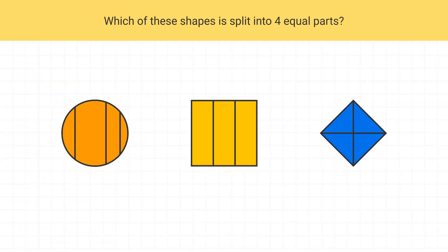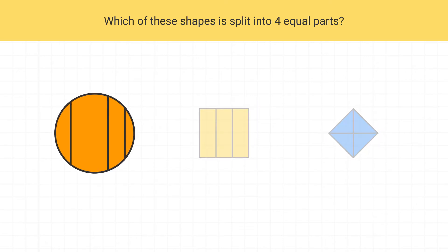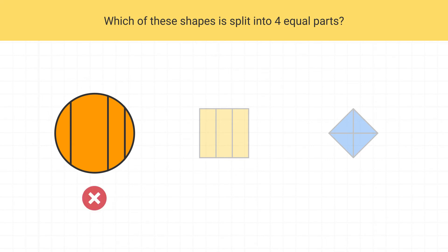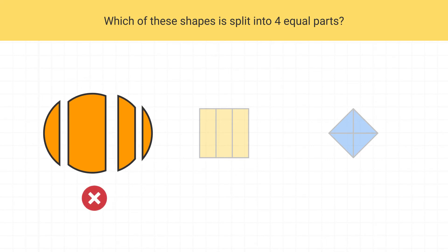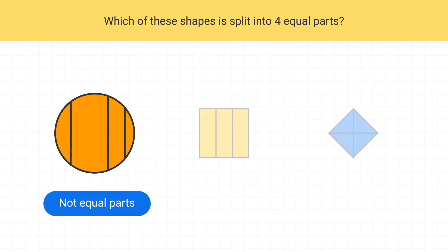Which of these shapes is split into four equal parts? Let's start by looking at this first shape. How many parts is this shape split into? This shape is split into one, two, three, four parts. But are all of the parts equal? No. All of the parts of this shape are not the same size. These are not equal parts. This is not our answer.